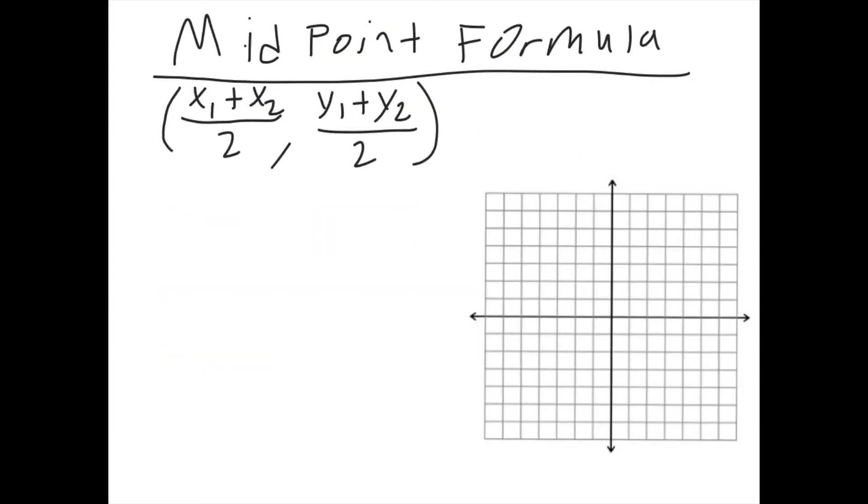All right. So the midpoint formula, instead of just giving you a number, it's actually giving you a point. So the midpoint formula takes two points and then tells you what point is halfway in between those two points. So if you notice here, x1 plus x2 divided by 2, it's taking the average of your two x's. And then y1 plus y2 divided by 2, it's taking the average of your y's. The midpoint formula is much easier than the distance formula.